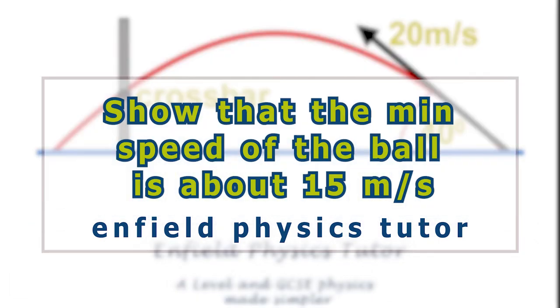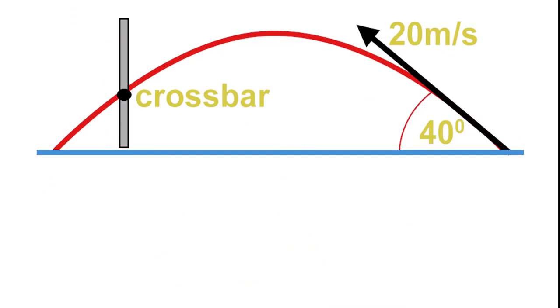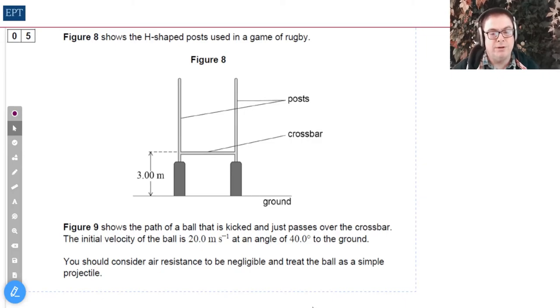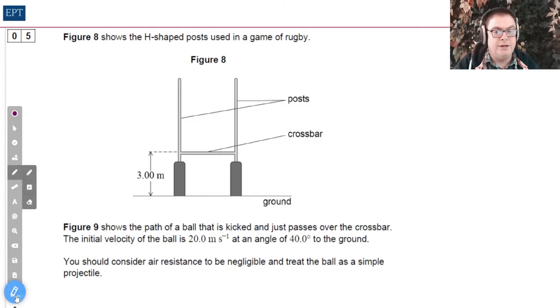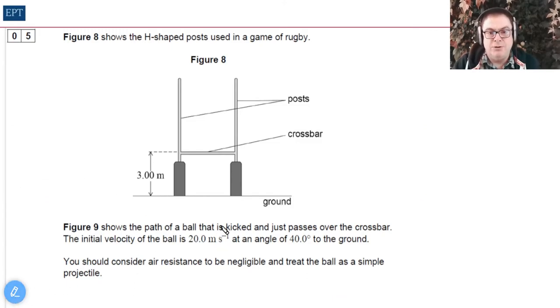Morning physics fans! Today we're going to look at a projectiles question from the AQA board 2021 paper one, question five. As you can see, here's the question. It's fairly bog standard kind of setup really. This time AQA have decided to use it in the context of the game of rugby, but of course it could be anything.